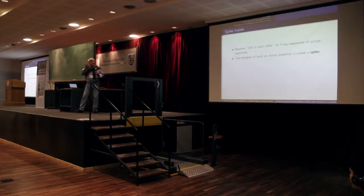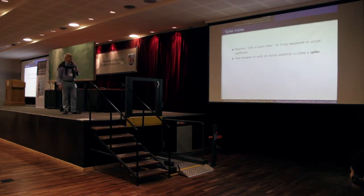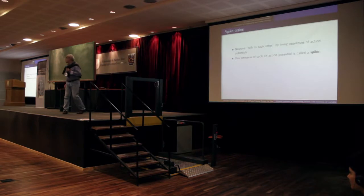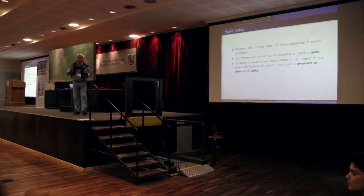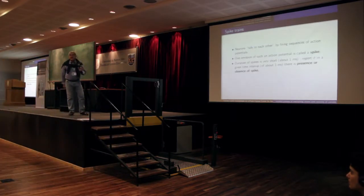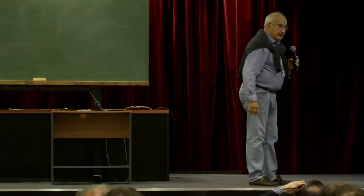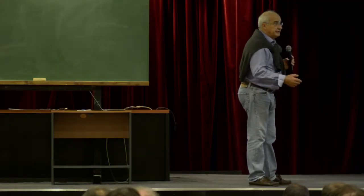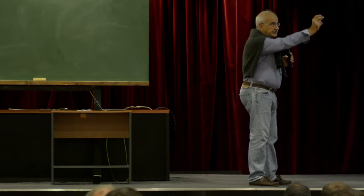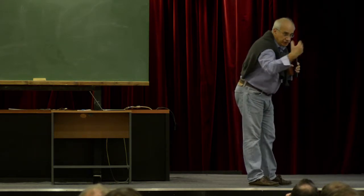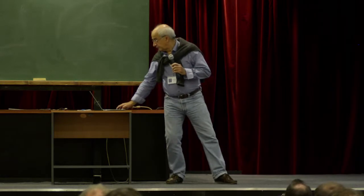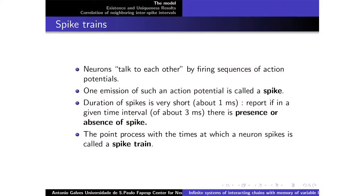So neurons talk to each other, they fire sequences of action potentials. We call the action potential a spike, and each spike has something like one millisecond. I'm going to make a discrete time model in which I have a time window. I now tell for each neuron if it has a spike or not in this small time window. People call this a spike train, I'll use spike train during the talk.